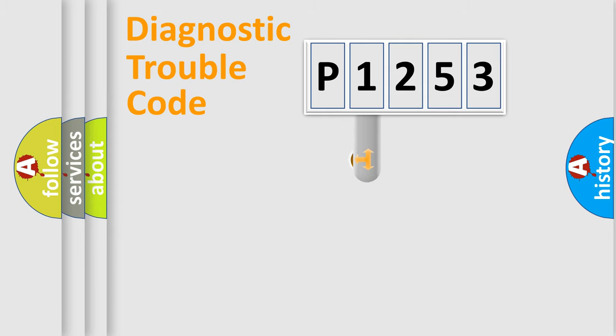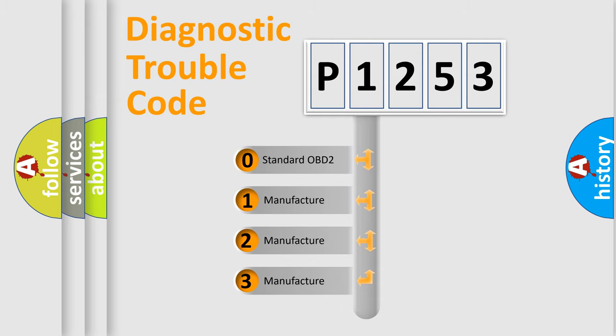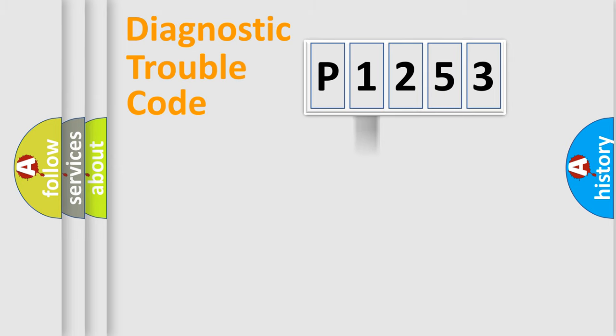This distribution is defined in the first character code. If the second character is expressed as zero, it is a standardized error. In the case of numbers 1, 2, or 3, it is a more prestigious expression of the car-specific error.